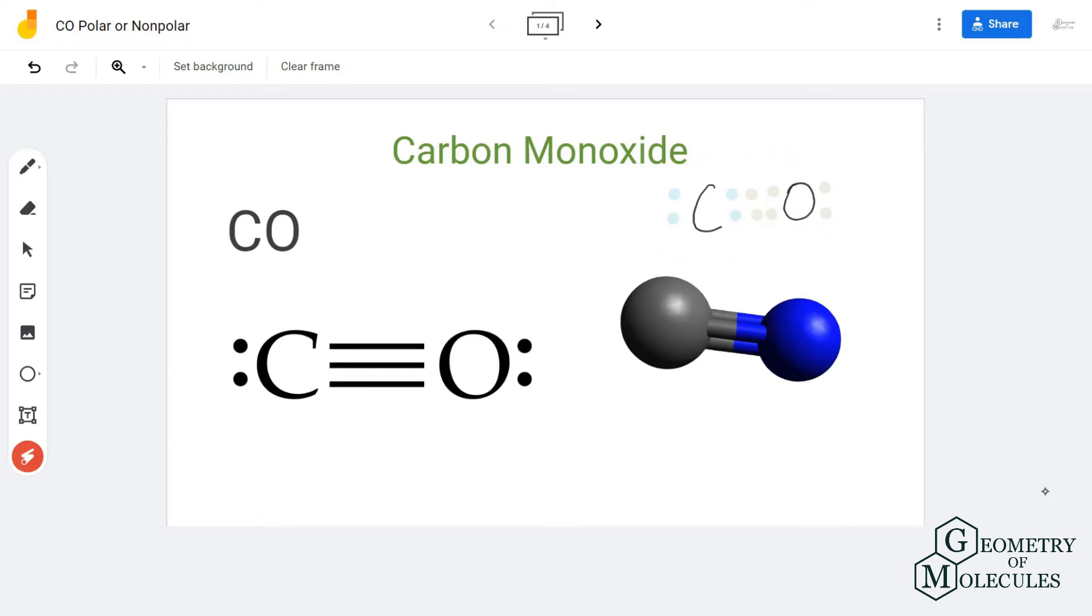So here you have the Lewis structure of carbon monoxide in which carbon and oxygen have triple bonds along with one lone pair of electrons on each atom. As it is a diatomic molecule, it has a linear molecular geometry.